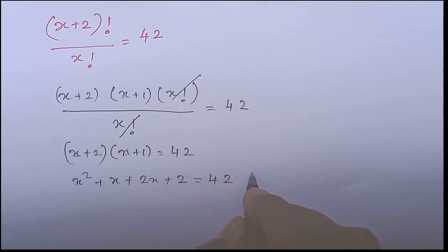Now this is nothing but x square plus 3x minus 40 is equal to 0. So now if you multiply you will have to get minus 40 plus 3. So we can say x square plus 8x minus 5x minus 40 is equal to 0.